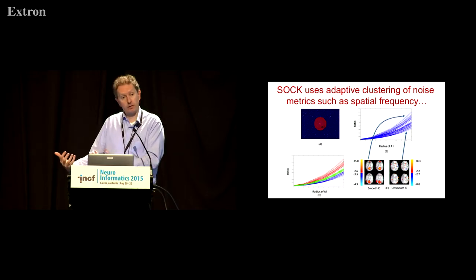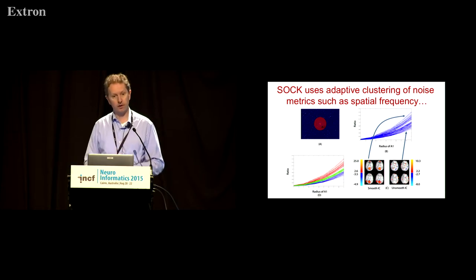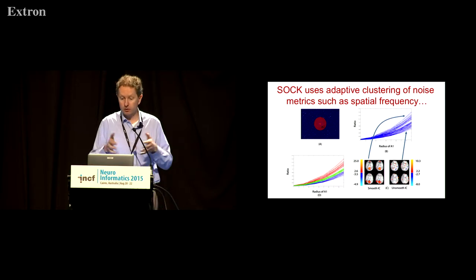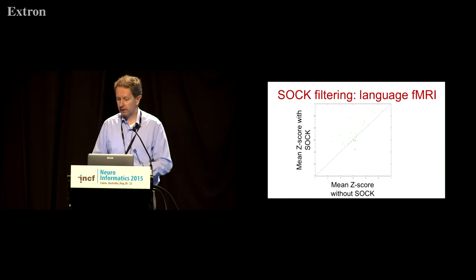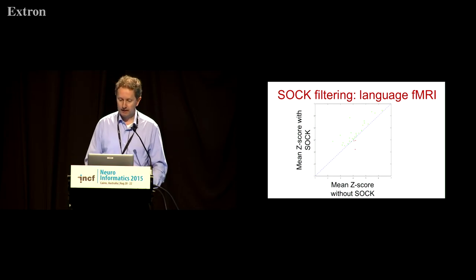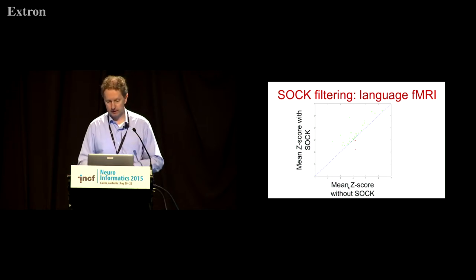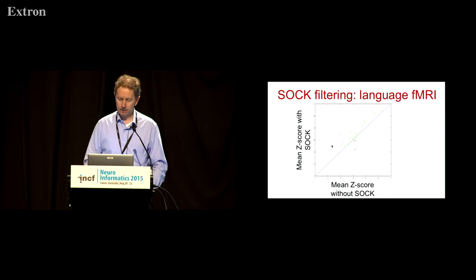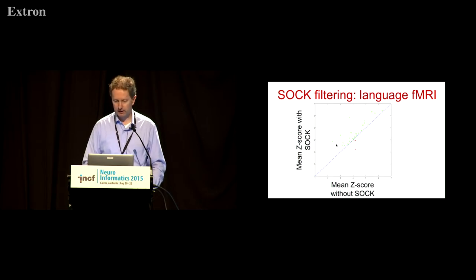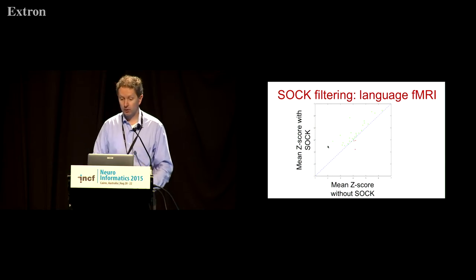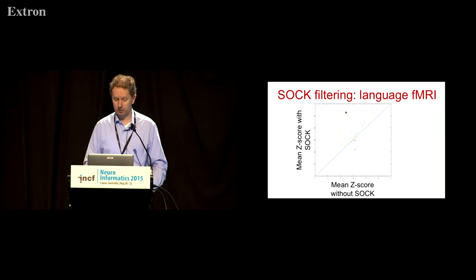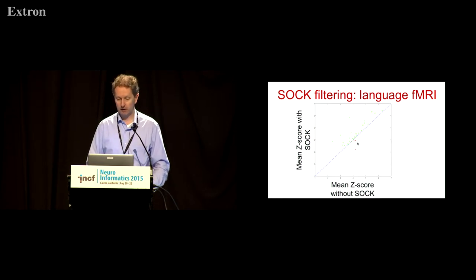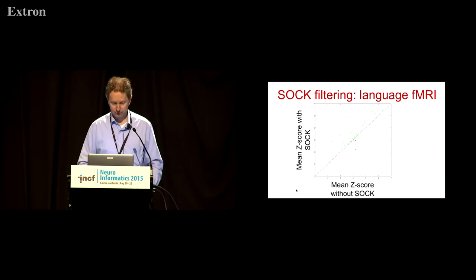That's great for interpreting data-driven analysis, but you can also take this one step further. Having identified the noise, you can combine this with a model-based approach and use it as a pre-filtering step. We tested this for language functional MRI on a study of 29 subjects. Here is a plot of the mean z-scores within a presumed language region of interest — without SOC on the x-axis and with SOC on the y-axis — showing that most subjects showed improved z-scores when SOC was used as a pre-filter. Importantly, we account for the reduced degrees of freedom in this adjustment and still get these improved z-scores.